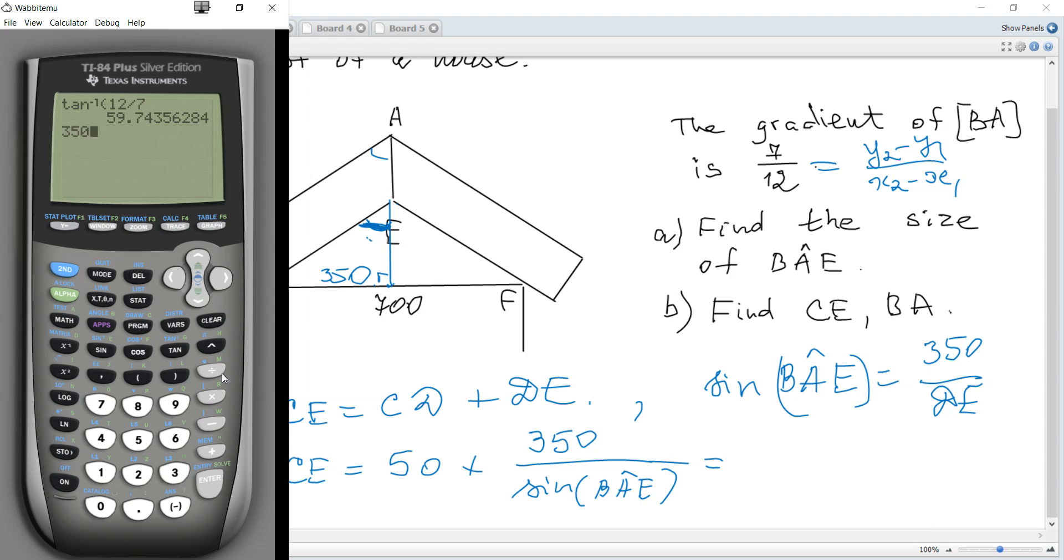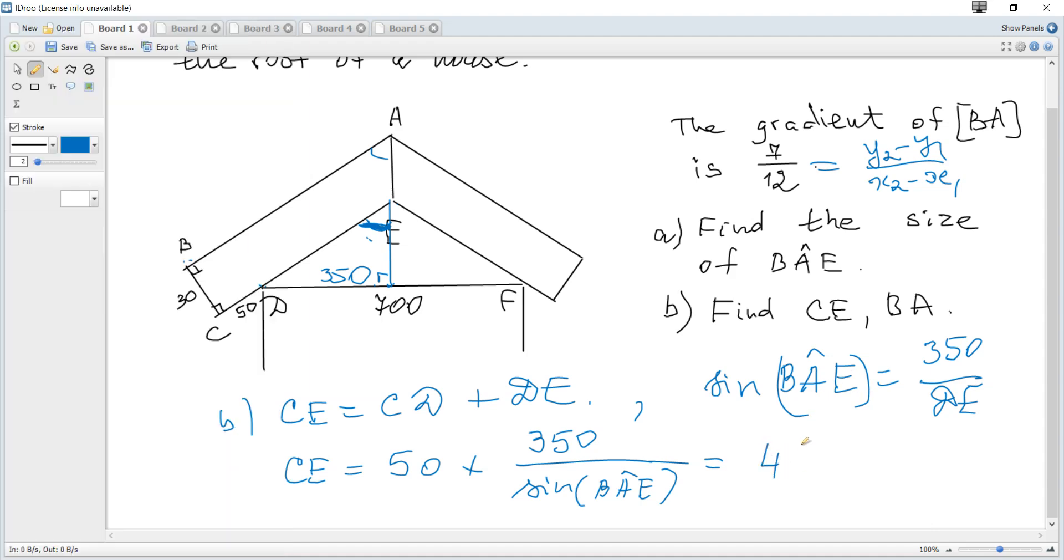Hence CE becomes 50 plus DE, which is 350 divided by sine of BAE. 350 divided by sine of the answer, then plus 50, and it's 455 centimeters.